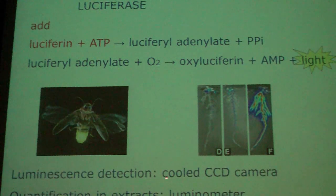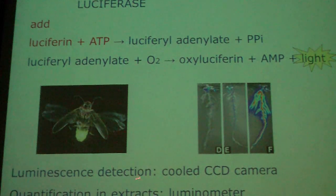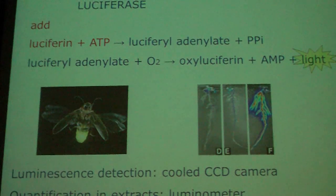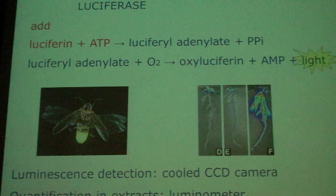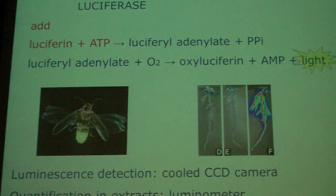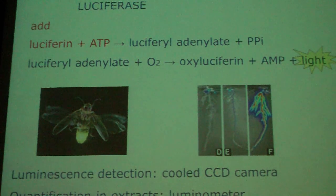You can also quantify luciferase activity. You grind up the plant, put it into a 96-well plate, add the substrate and ATP, and measure it in 96-well format using a luminometer. The luminometer has a detection system that quantifies the amount of photons of light emitted.